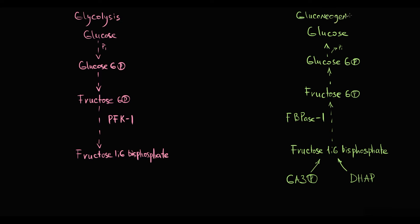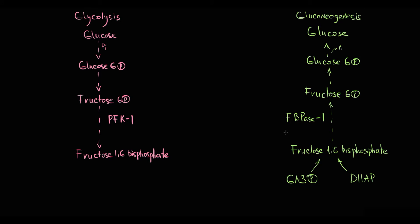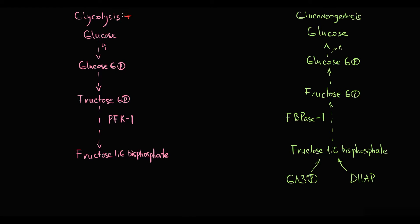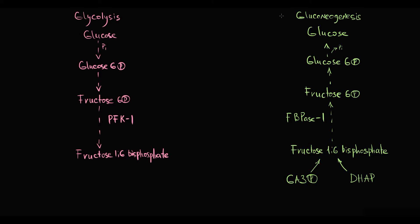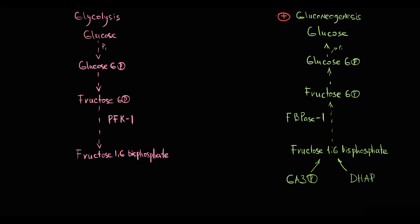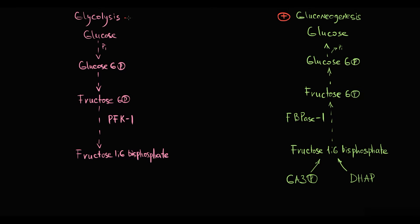From this point, we will call fructose-1,6-bisphosphatase FBPase. These two processes occur in opposite directions, and processes that occur in opposite directions cannot be active at the same time. If glycolysis is activated, gluconeogenesis must be inhibited, and vice versa — if gluconeogenesis is activated, glycolysis is inactive.